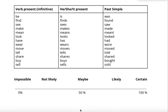We've also got some useful words here. When something is zero percent — impossible. A little bit more — not likely. Fifty percent — maybe. More than maybe — likely. And a hundred percent — certain. This will happen, or this did happen, or this does happen.